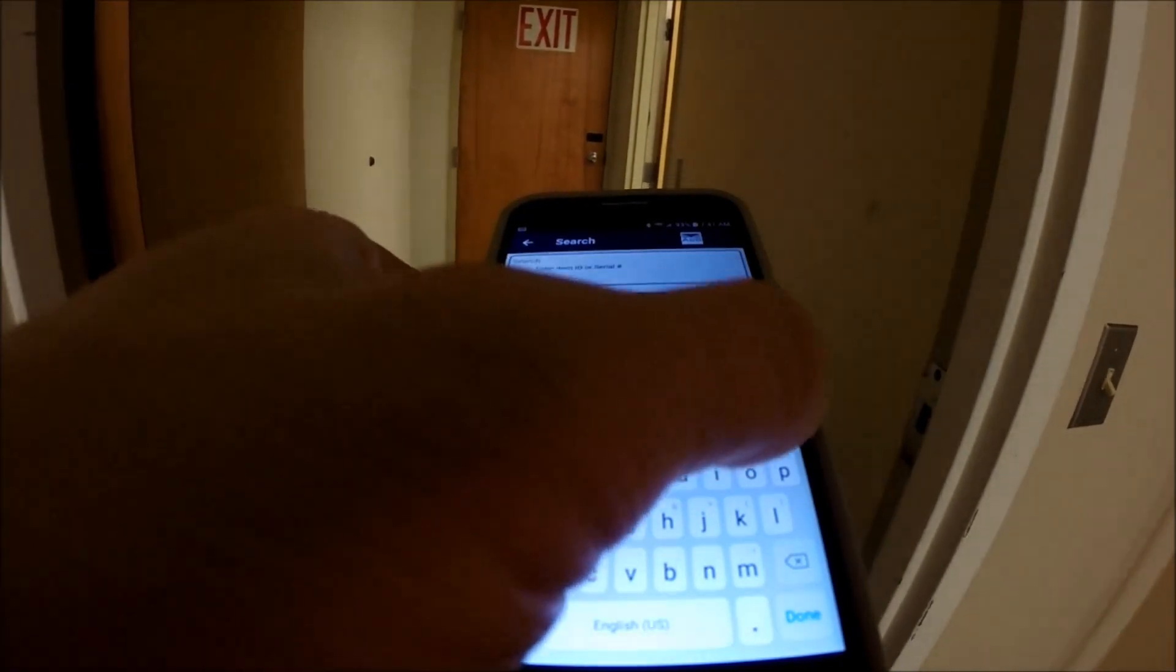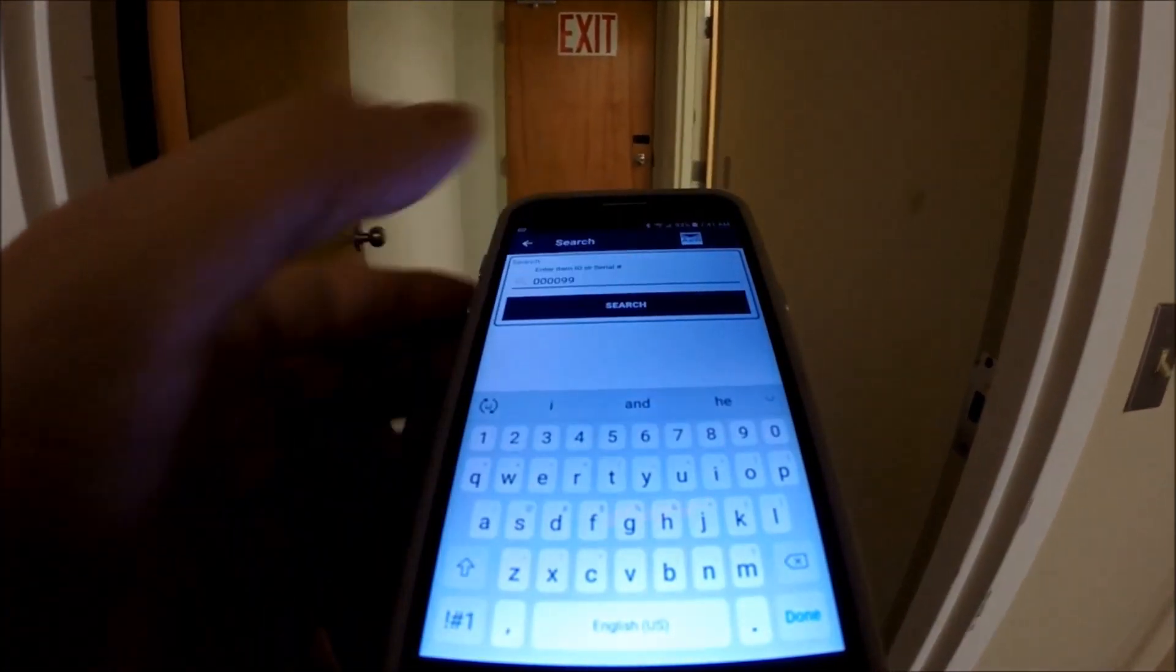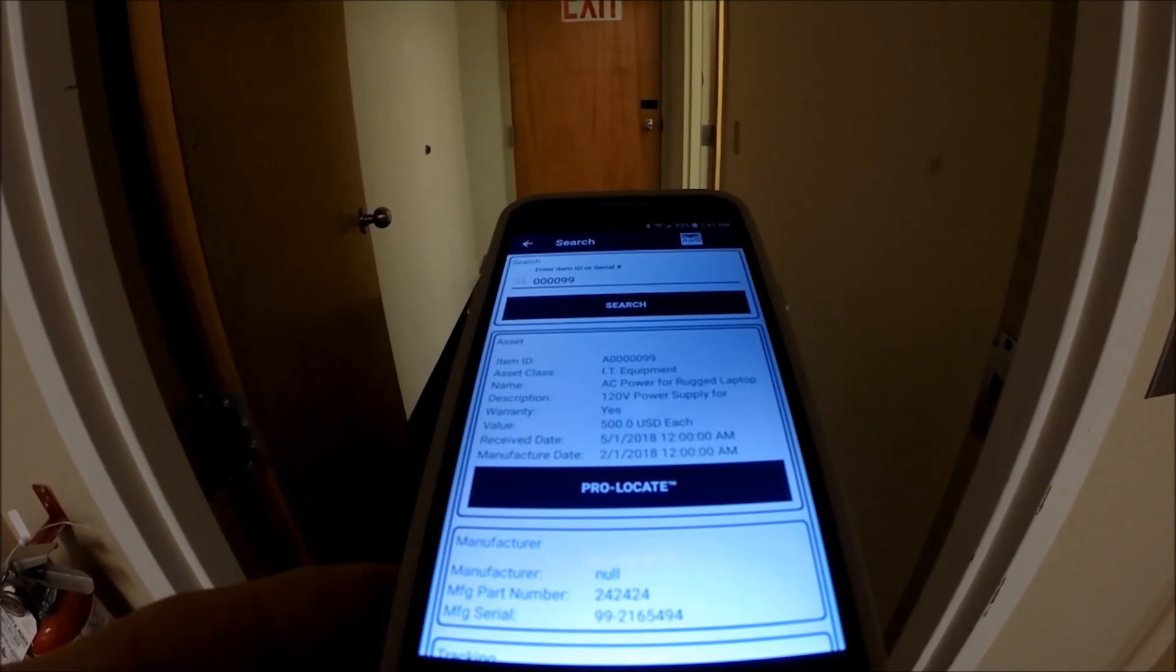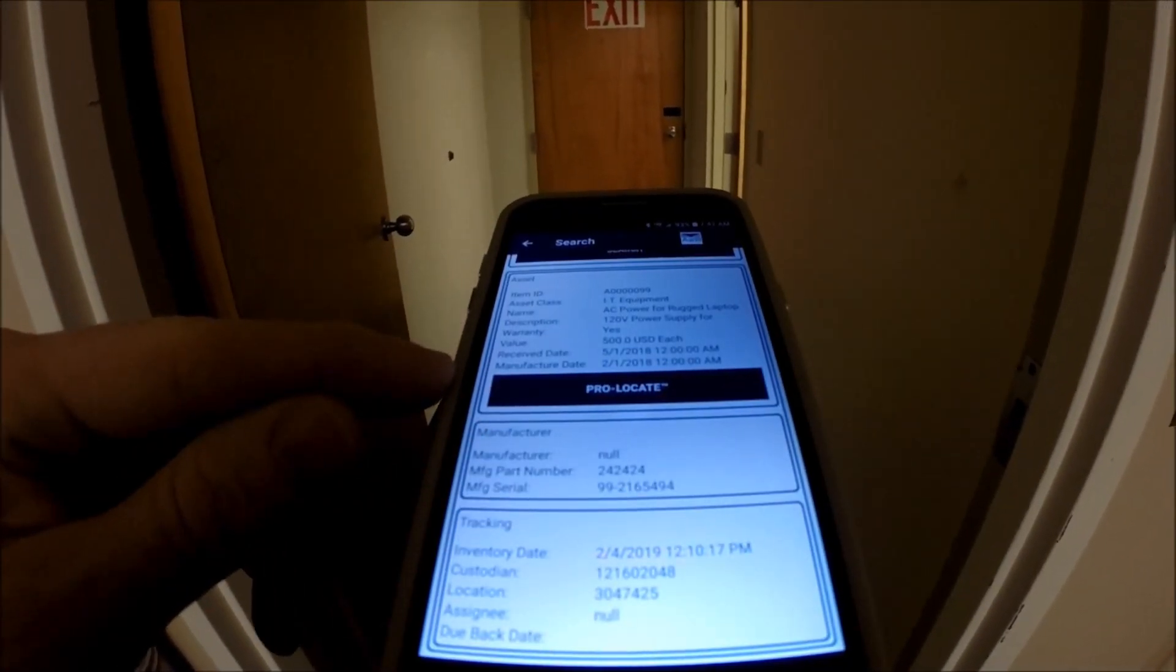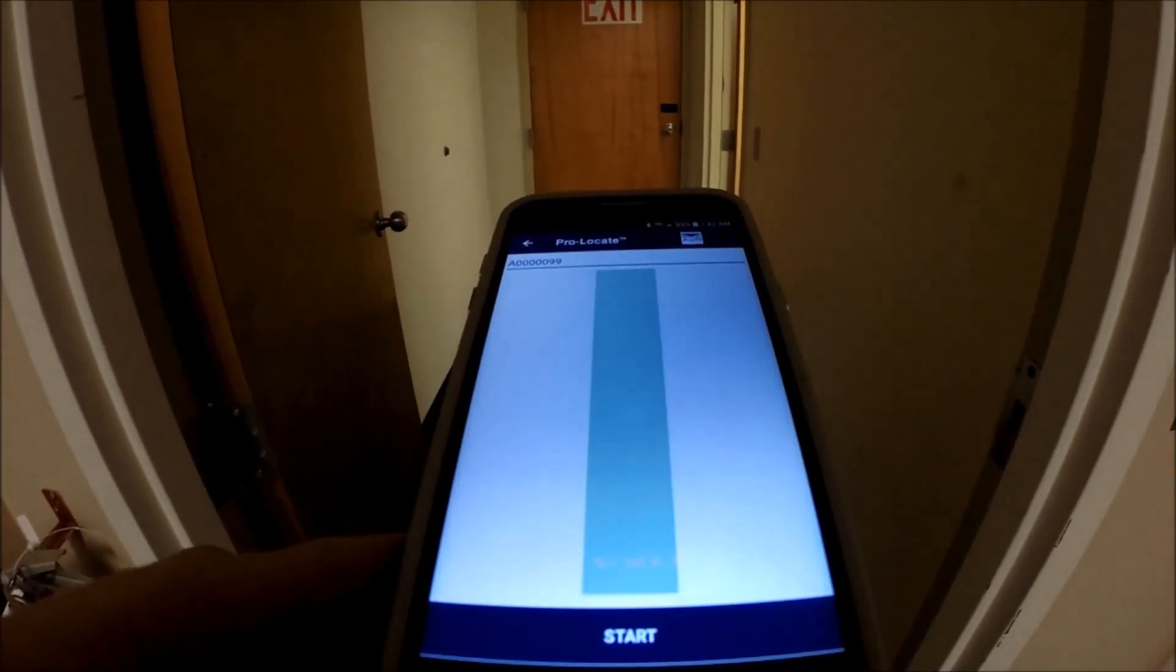I can click search and I happen to know the asset ID. I'm going to search on that asset ID so it'll go right to it. Here's the pedigree of that asset. I know I'm looking for the right one. And now I can use ProLocate.